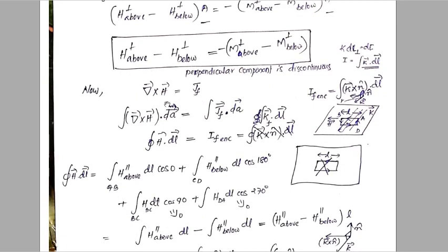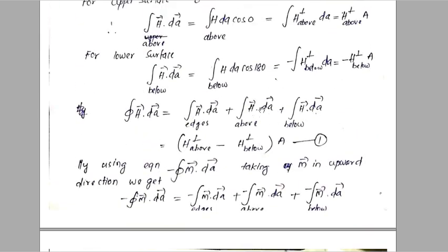Now we have to find the boundary condition for the parallel component. We need the integral form of the curl equation. The line integral of H gives the enclosed current. The current density Jf is defined as dI by dA perpendicular, and the total enclosed current is the surface integral of Jf dot dA.